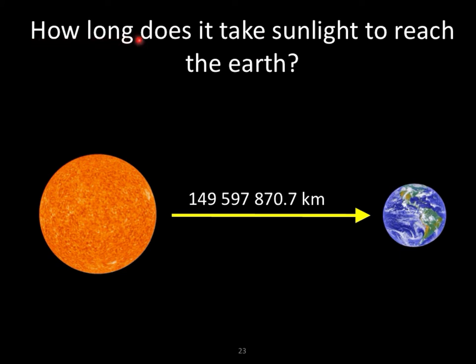Here is another example: how long does it take sunlight to reach the Earth? We know that the average distance from the Sun to the Earth is 149,597,870.7 kilometers.